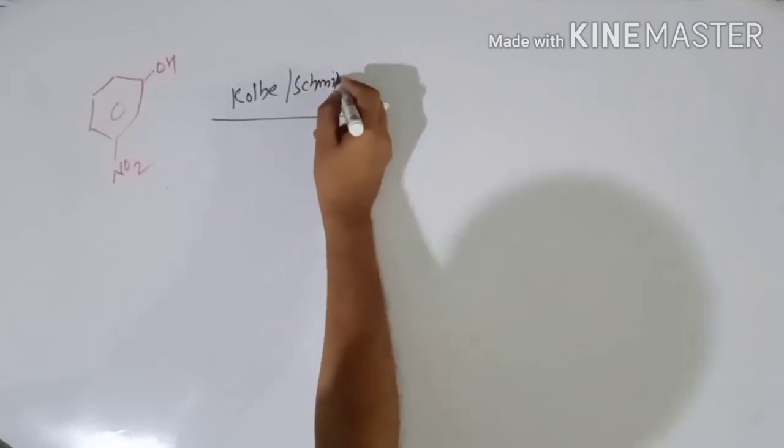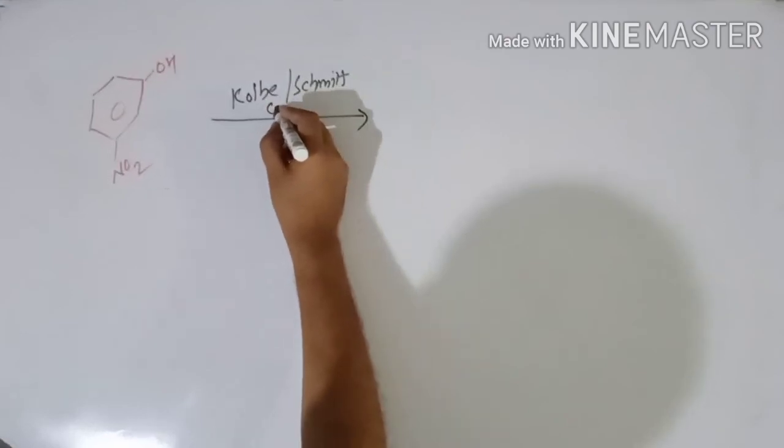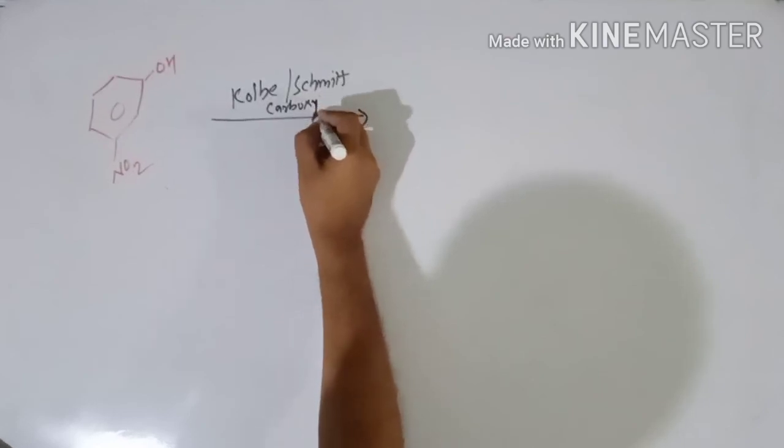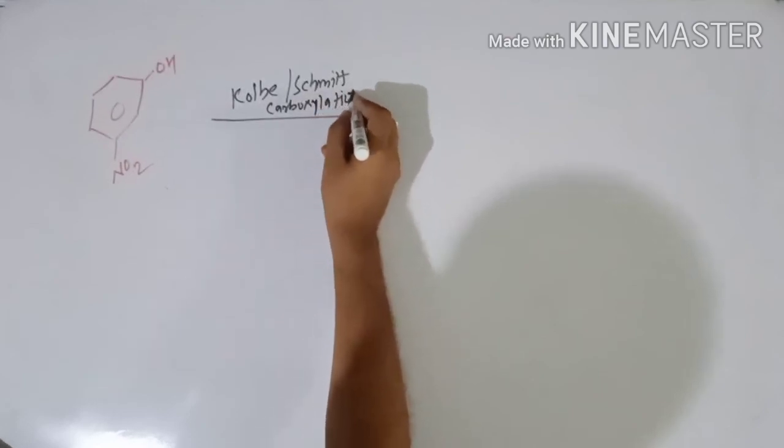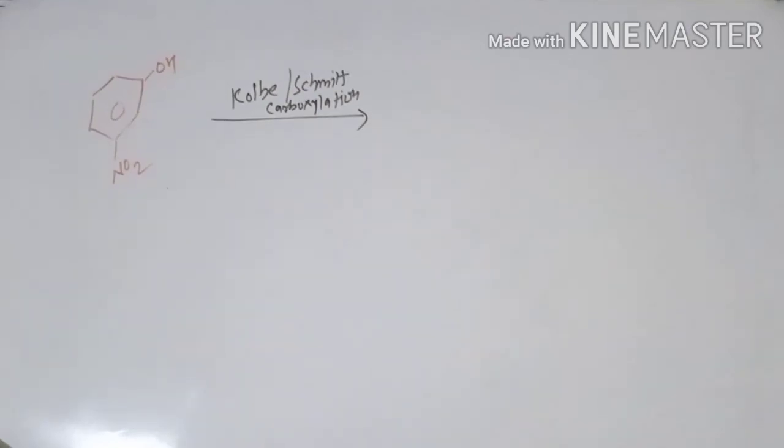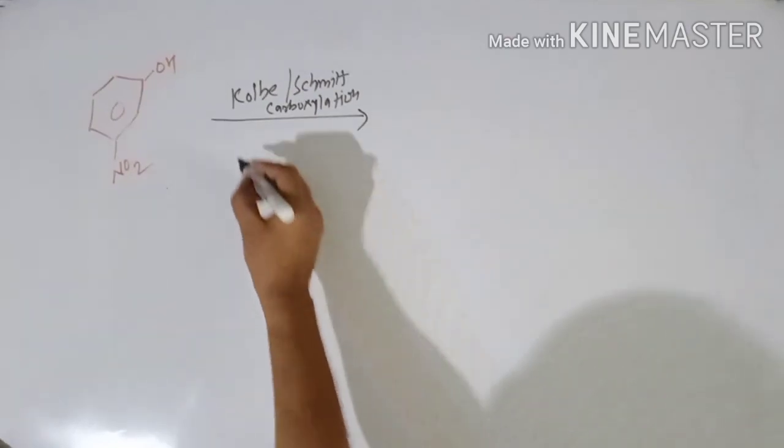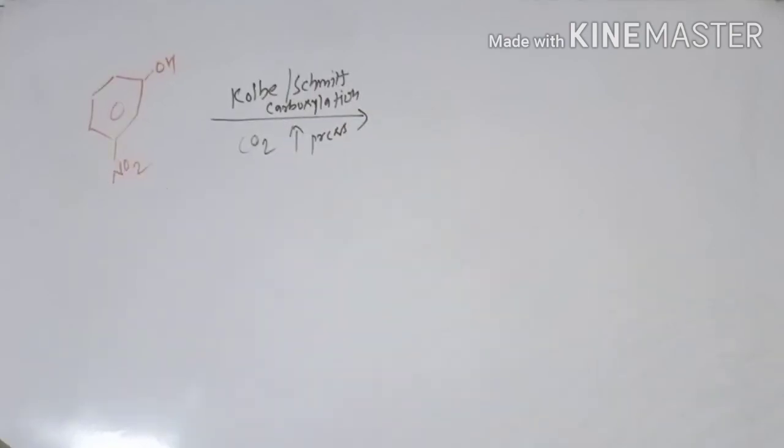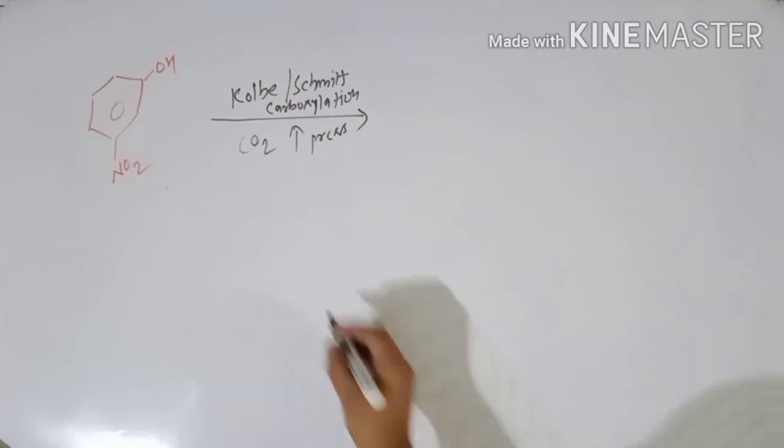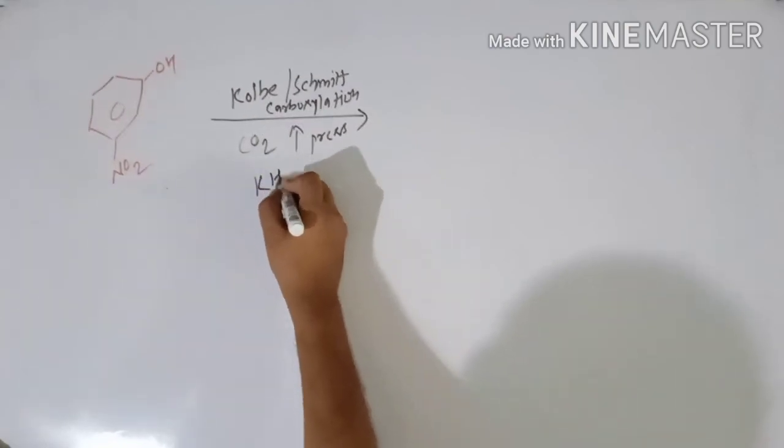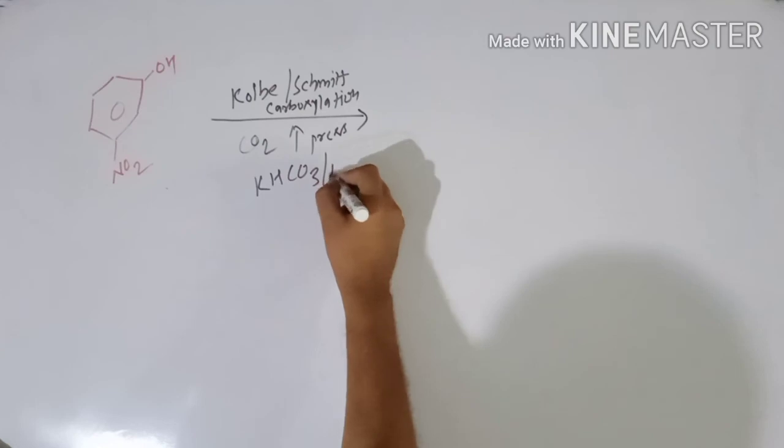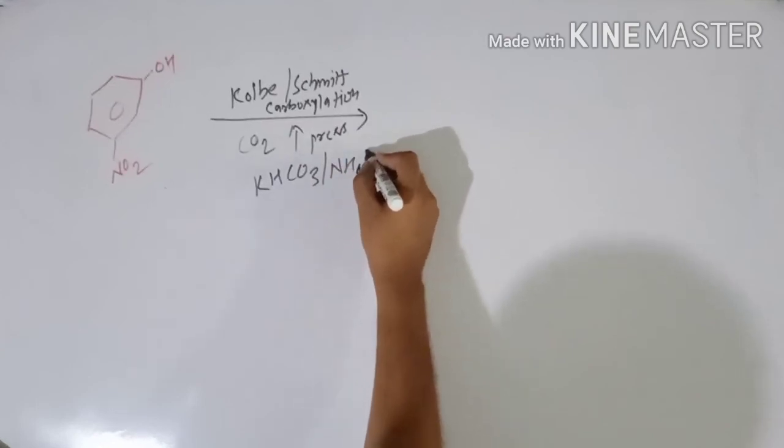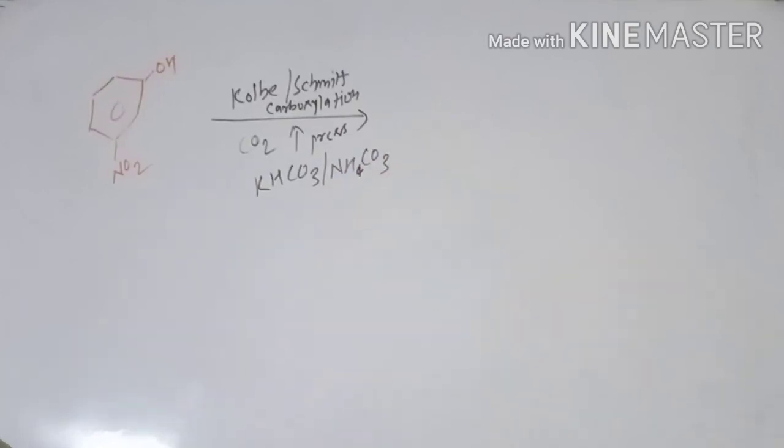Kolbe-Schmidt carboxylation, in which we use carbon dioxide at higher pressure and in the presence of potassium carbonate or ammonium carbonate.